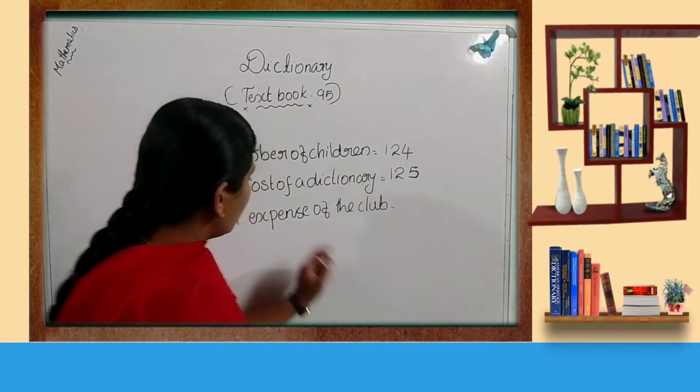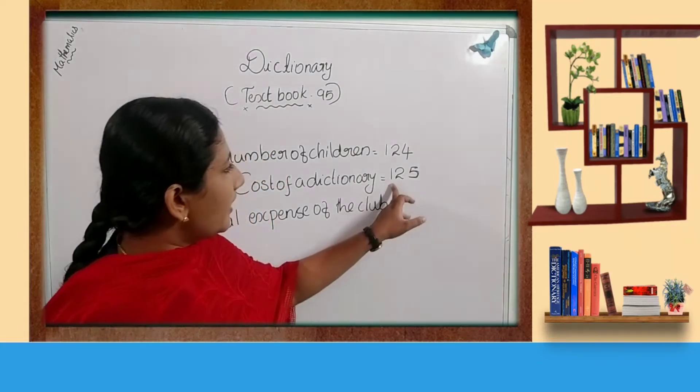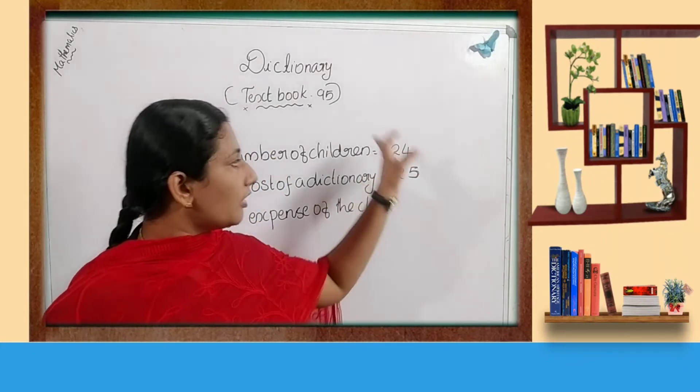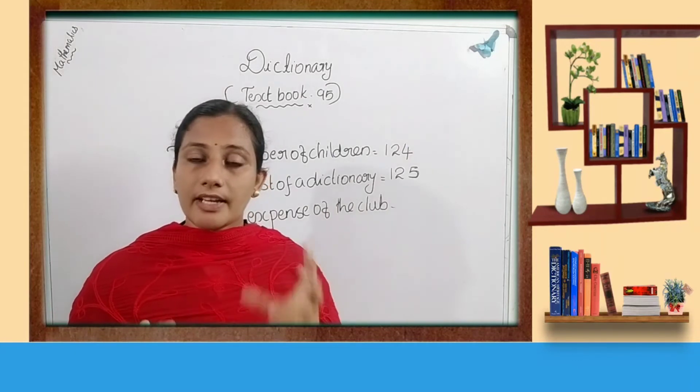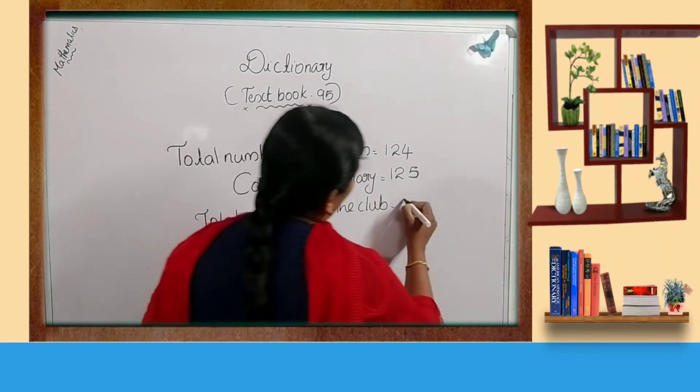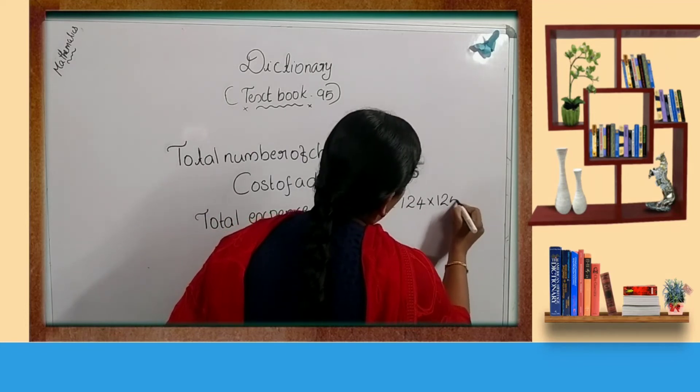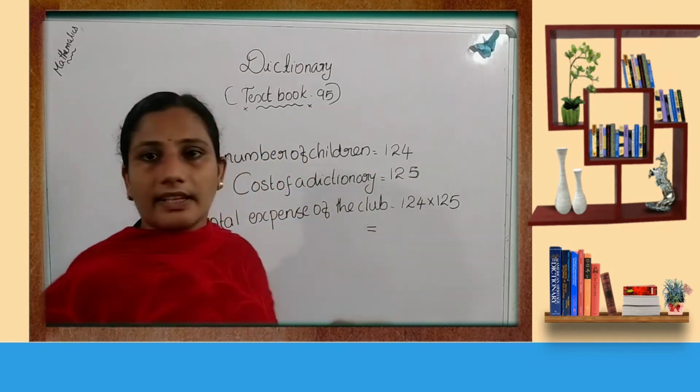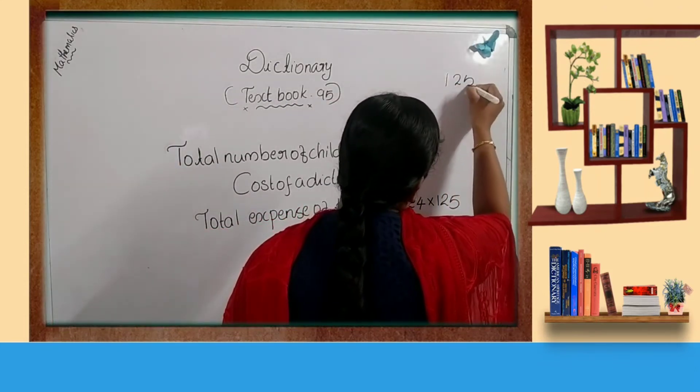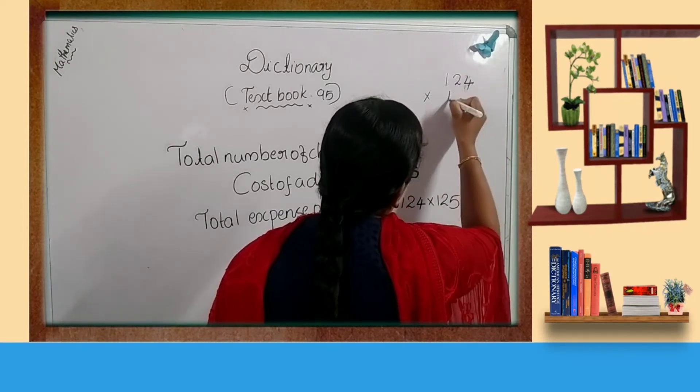Then total expense of the club means 125 into 124, because 124 how many times? 125 times repeated addition. So how do we find? 124 into 125. Then let us find the answer. First, 124 into 125.